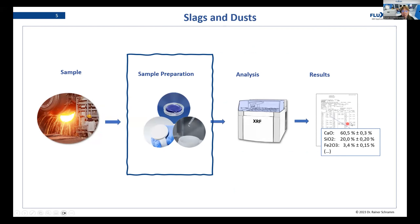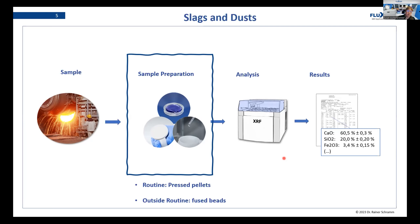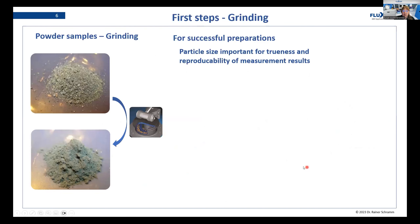Now we will have a look at sample preparation — how we can prepare these slags and filter dusts. For routine slag preparation, it is most of the time pressed pellets. When you are in your routine and have to analyze slags on a regular basis, it will be pressed pellets in most cases. But if your slags show different values outside of your routine that you are not expecting, fused beads might be a good idea.